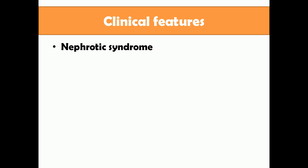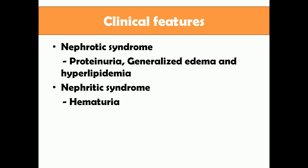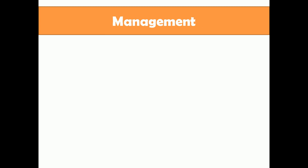Clinically, patients can manifest as nephrotic syndrome — classically a triad of proteinuria, generalized edema, and hyperlipidemia — or with combined symptoms of nephritic syndrome. In these patients, the most common symptom of the nephritic component is hematuria, which is blood in the urine.